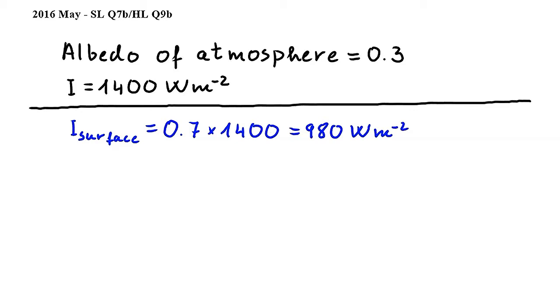So this is the intensity at the illuminated part of the surface of the earth. Next let's calculate the average intensity over the entire surface of the earth. To do this we have to find what fraction of the entire surface is illuminated by the sun at any given moment.